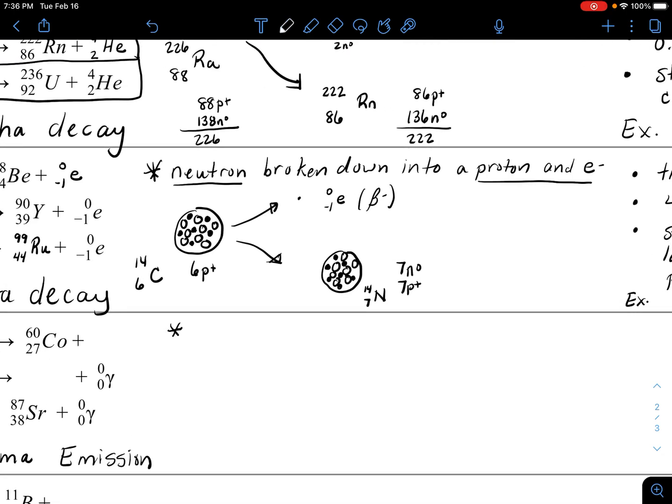The first thing you might want to write down here is that gamma emission many times accompanies, or it's a part of, beta or alpha decay. So don't be surprised if in an alpha or beta decay problem you end up with gamma being emitted.